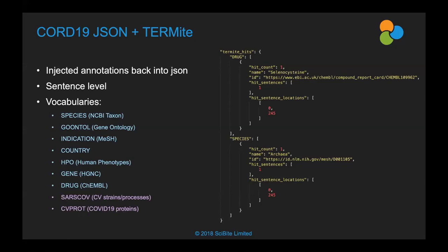We did that using a list of vocabularies. In brackets are the ontologies they are originally aligned to: species is aligned to NCBI Taxon, gene ontology is its own thing, indication is aligned to MeSH, country uses standard country codes, HPO is human phenotypes, genes use HGNC IDs, and drugs are aligned to ChEMBL. Two special vocabularies were developed specifically for this dataset — the SARS-CoV vocabulary looks for coronavirus strains and viral processes, bringing them together so you can say these are definitely coronavirus-related.